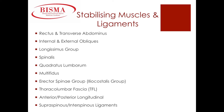Let's look at the stabilizing muscles and ligaments within our core, starting with the local or deep muscles. The transverse abdominis provides anterior support to our core. The multifidus provides posterior support, and the quadratus lumborum supports the lumbar spine. The internal obliques provide lateral support, our pelvic floor muscles provide inferior support, and our diaphragm provides superior support.